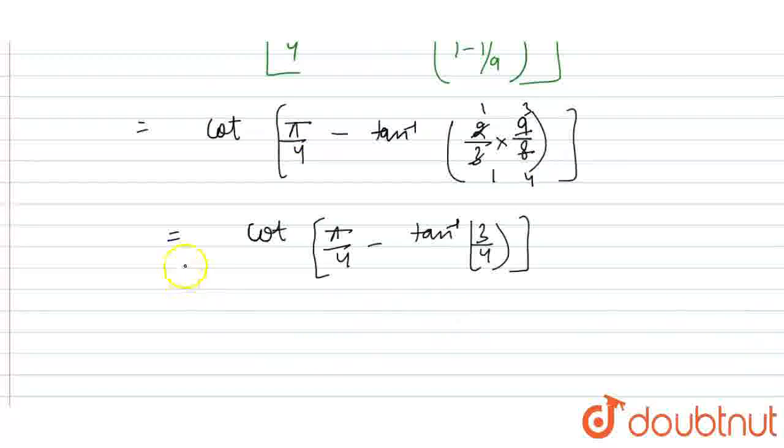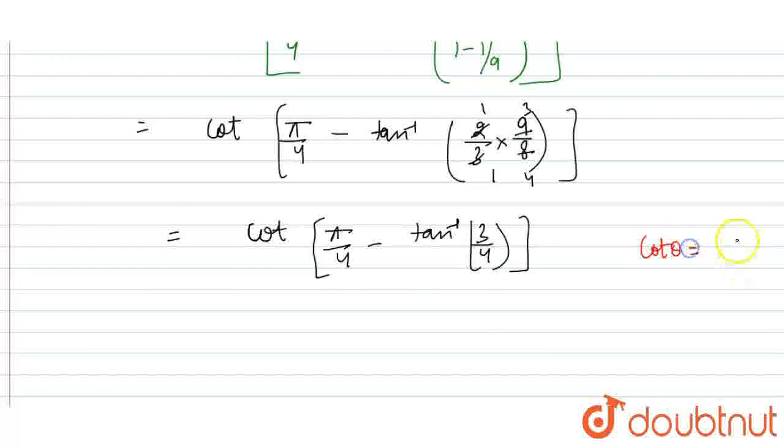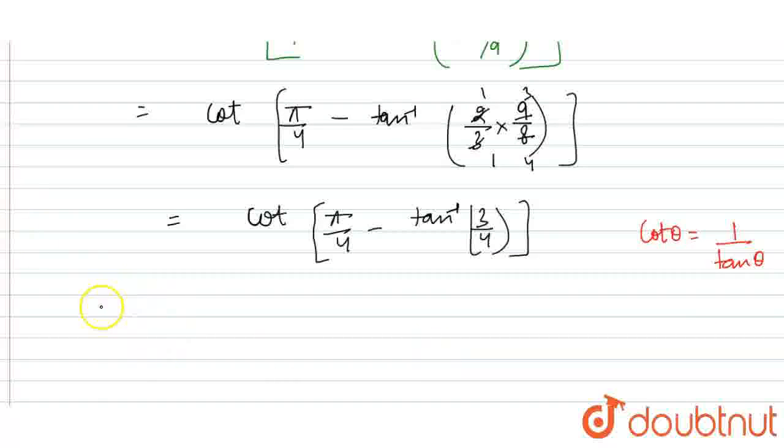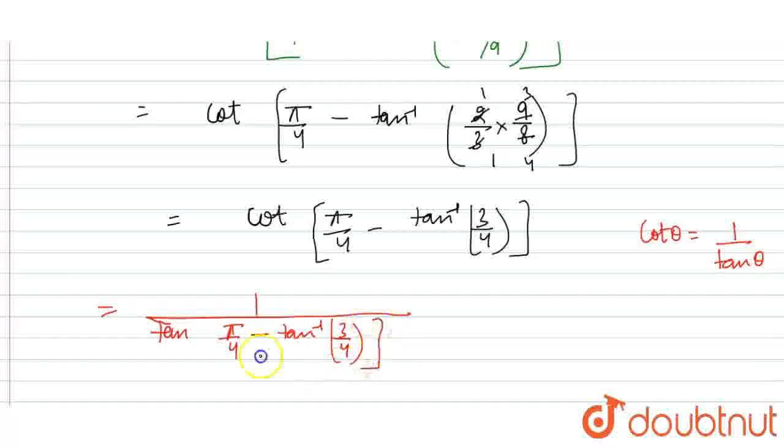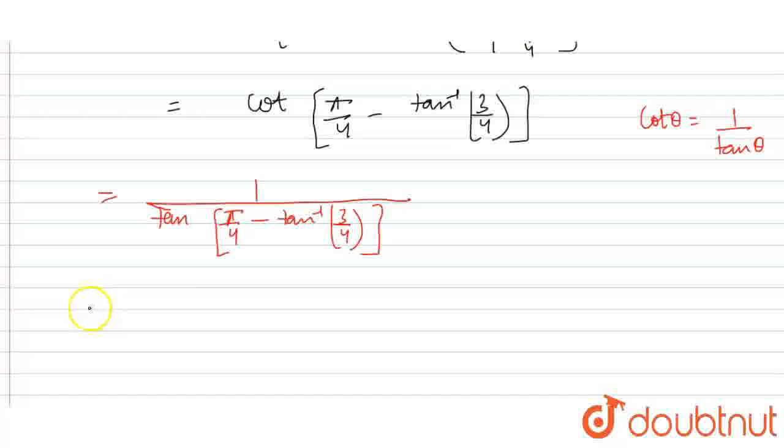Now, solving it further, we know that cot theta can be treated as 1 upon tan theta. So, similarly, we are going to write it. That equals 1 upon tan theta, where theta is pi/4 minus tan inverse 3/4. This is complete as theta. So, we have written it in this form.